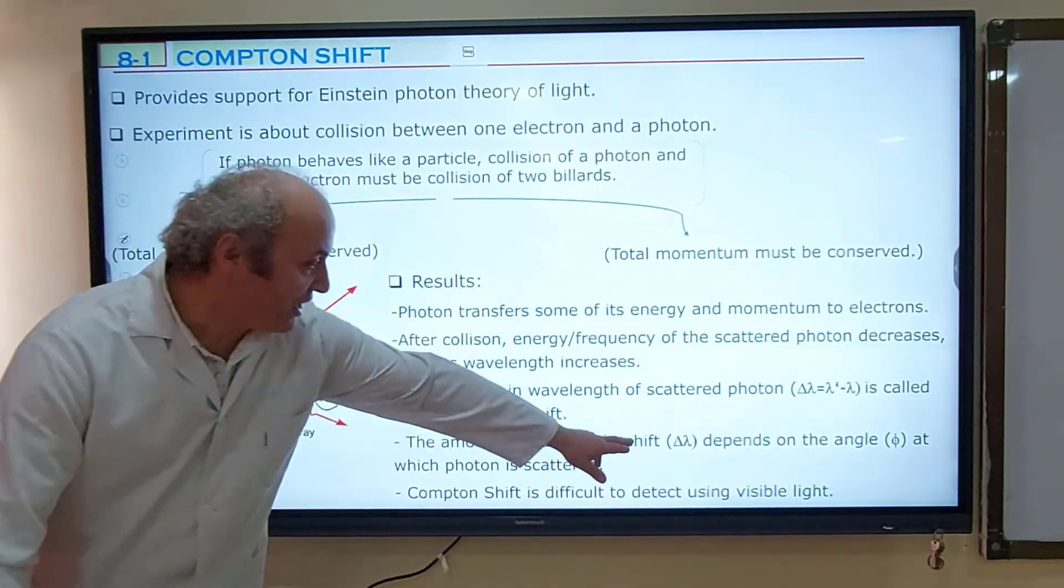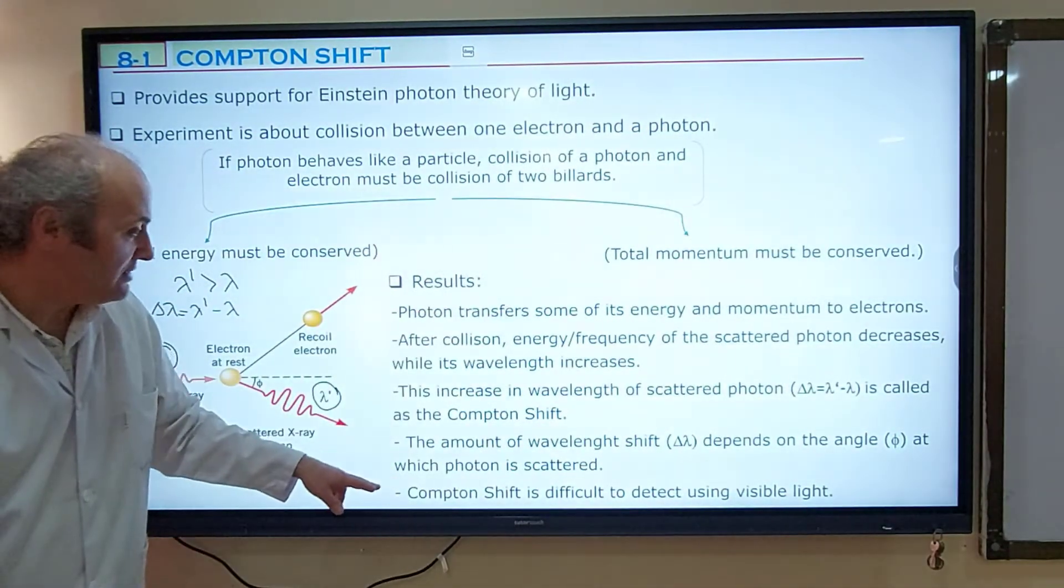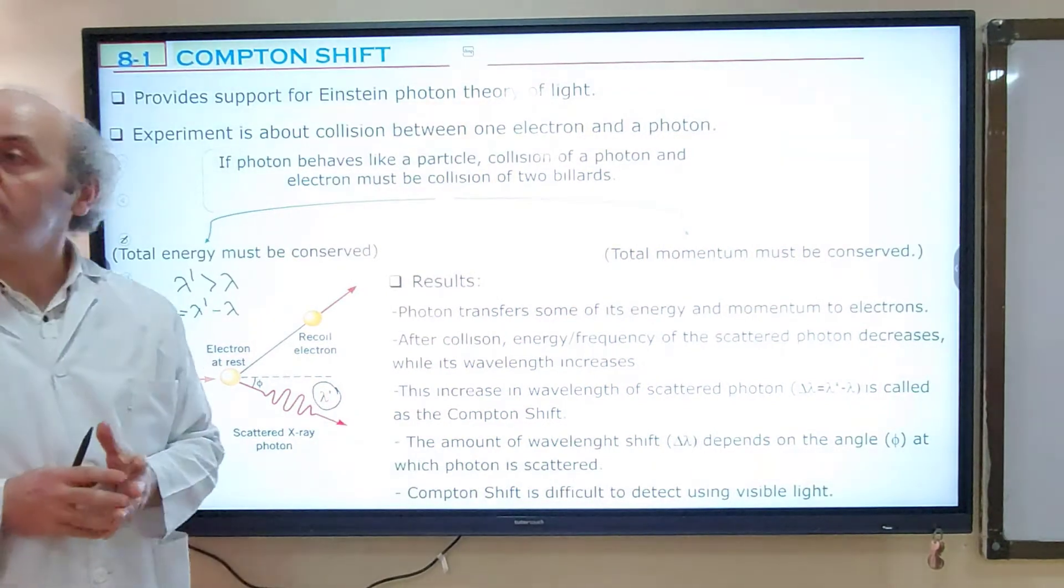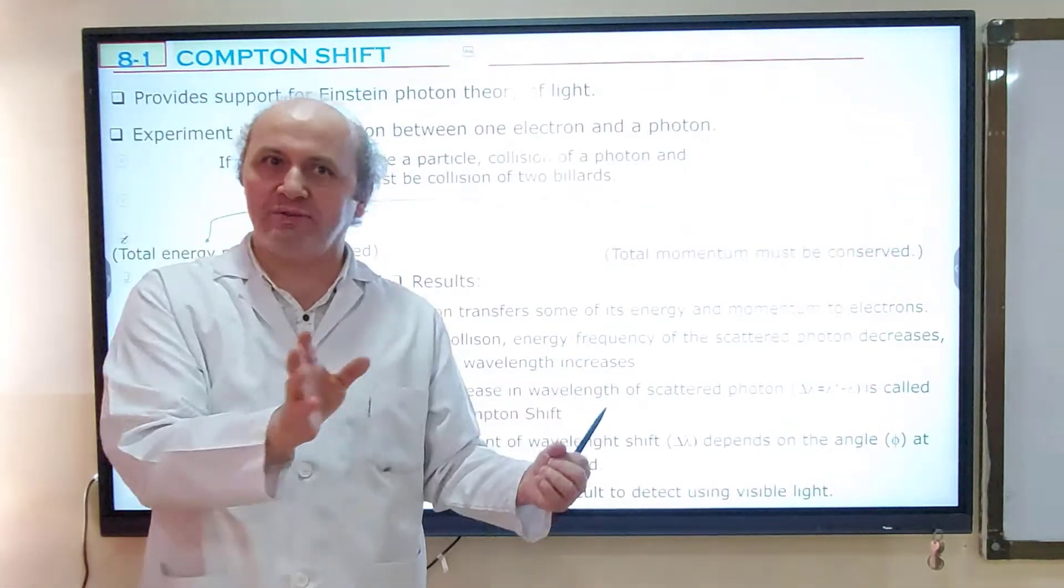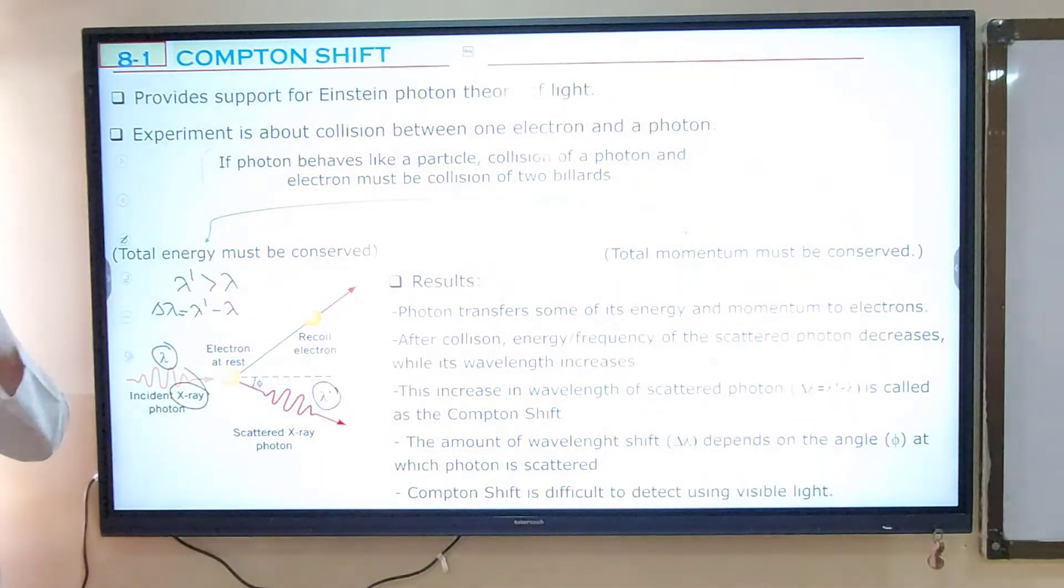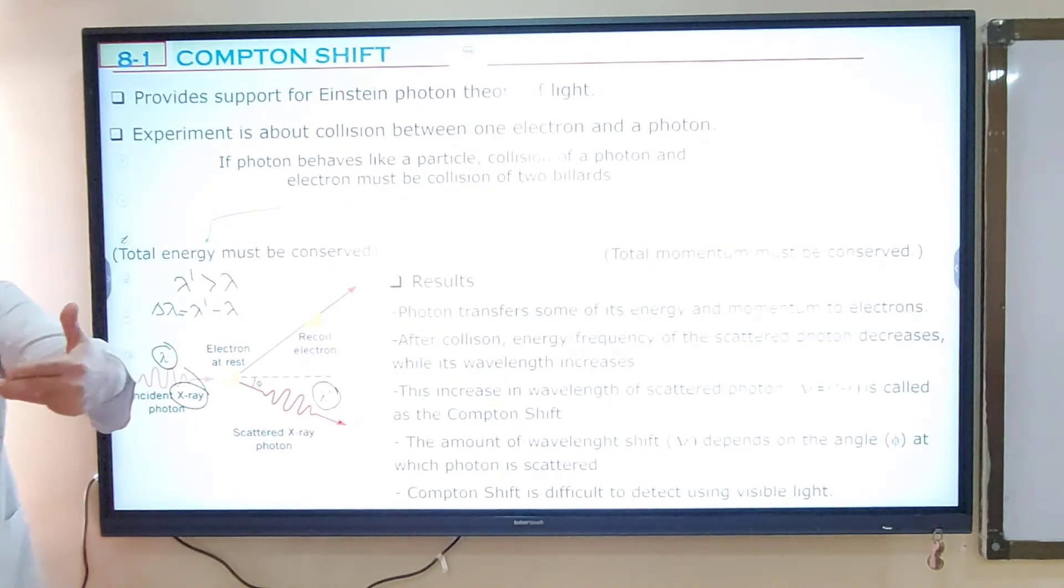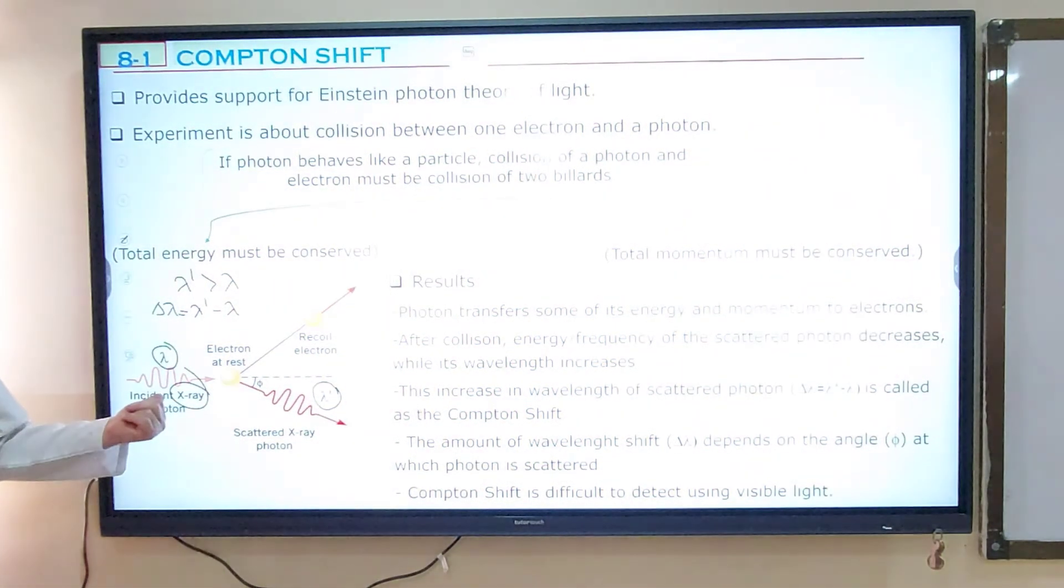The amount of the wavelength shift delta lambda depends on the angle theta at which photon is scattered. And Compton shift is difficult to detect using visible light. Not observable. You should use high energy photons, X-ray photons. X-ray has big energy compared to visible. So only by X-ray, this experiment can be done. This is an interesting example question: Which kind of photon must be used in Compton shift experiment? X-ray.